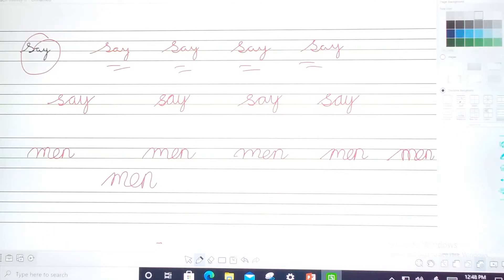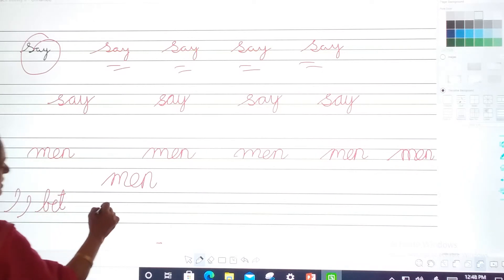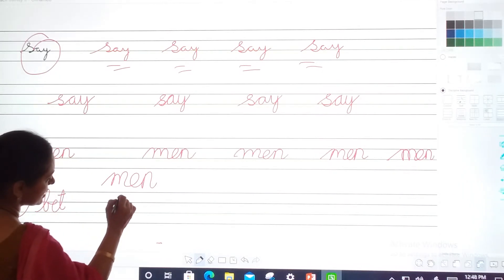And the spelling is bet. B, E, T, bet. B, E, T, bet. Once again. Dekho kaise leke jana hai oopar tha. It's called B, E, T, bet.